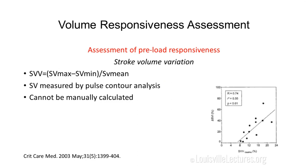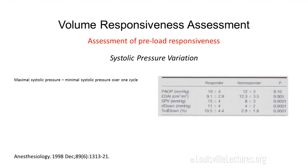You can also use stroke volume variation, since pulse pressure is a surrogate of stroke volume. However, you need a device to give you the stroke volume — such as the Vigileo device we have here. The formula is essentially the same. You can also use systolic pressure variation: the maximum systolic pressure minus the minimum systolic pressure over one respiratory cycle. One study found that fluid responders had a systolic pressure variation of 15 vs. 18 in non-responders.